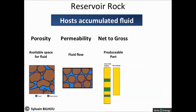The net to gross is a measure of the potentially producible part of the reservoir. It is expressed as a percentage between the producible part of the reservoir — the net — and the overall thickness of the reservoir — the gross.